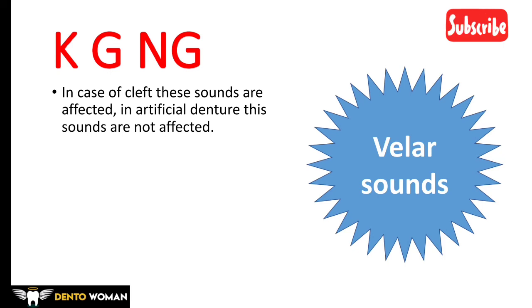Velar sounds: when the tongue forms a valve similar to the other lingua palatal sounds but more posteriorly, they are called velar sounds, specifically produced from the soft palate. Sounds like K, G, NG — as in 'I'm going' — the 'ing' portion is a velar sound. In case of cleft palate, these sounds are affected; in an artificial denture, these sounds are not affected.